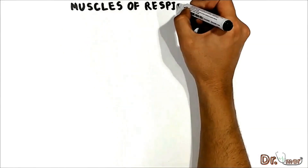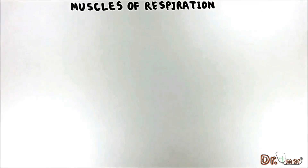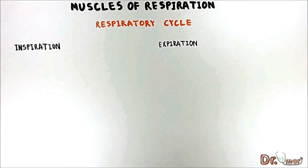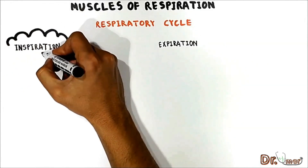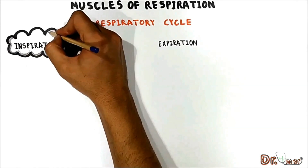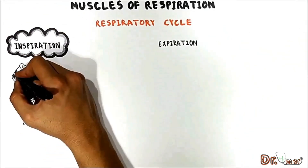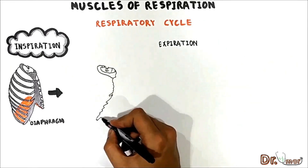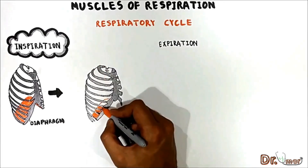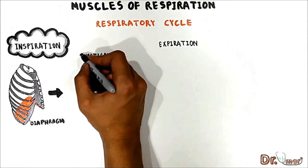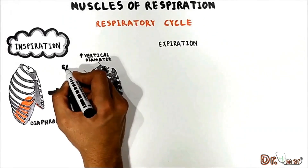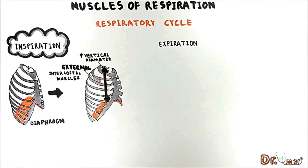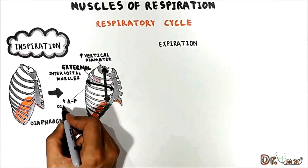Let's deal with lung mechanics and first talk about muscles of respiration. The respiratory cycle is composed of inspiration and expiration. Inspiration is an active process requiring muscle contraction. During quiet breathing, the major muscle of inspiration is the diaphragm. When the diaphragm contracts during inspiration, this enlarges the vertical dimensions of the chest. Also utilized are the external intercostal muscles of the chest wall, whose contraction causes the ribs to rise and increases the anterior-posterior dimensions of the chest.